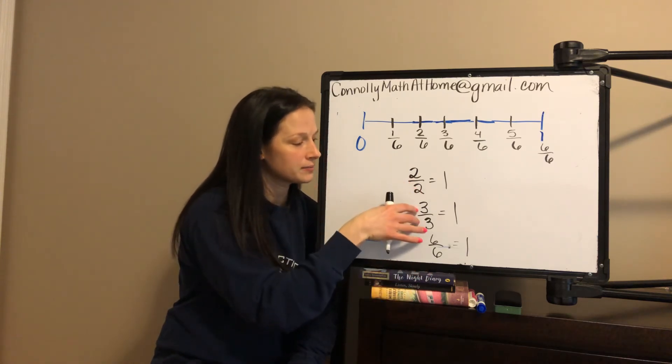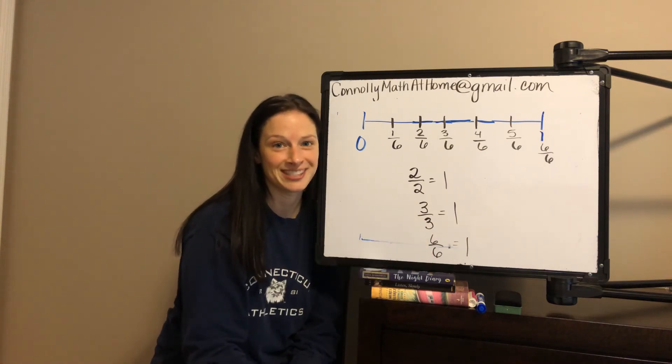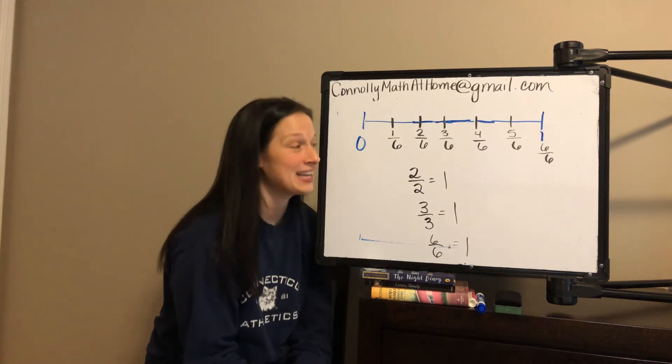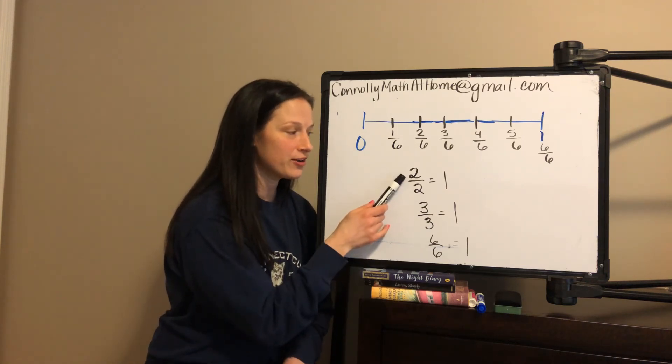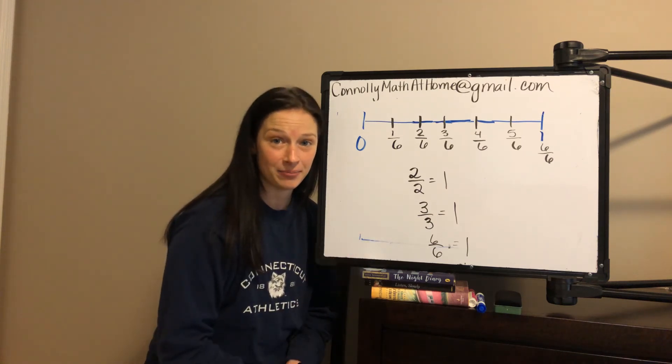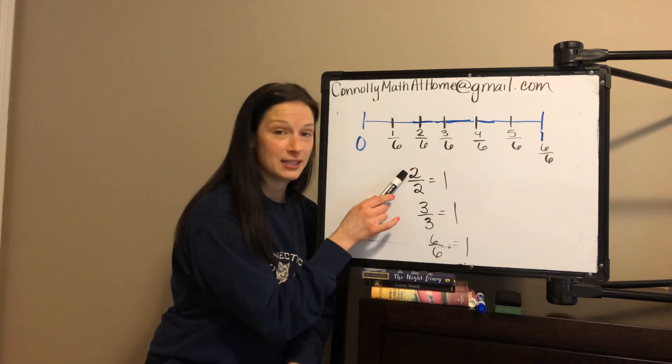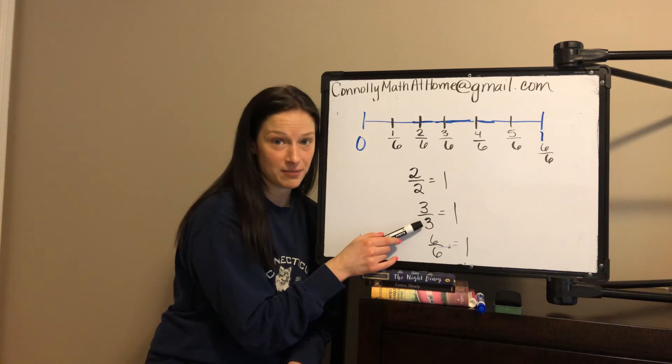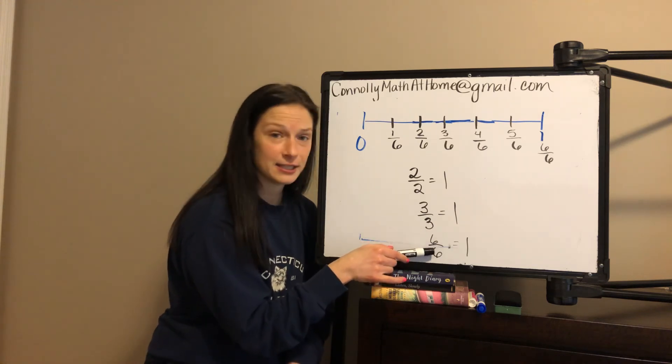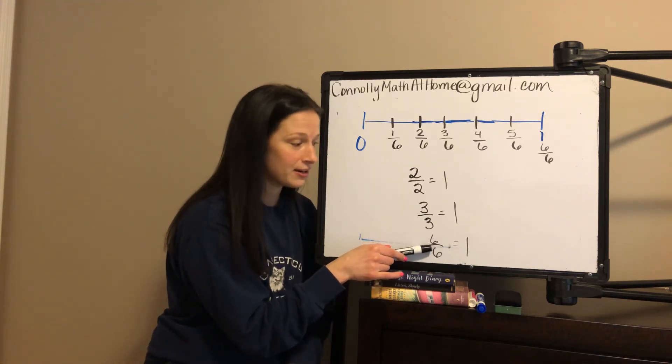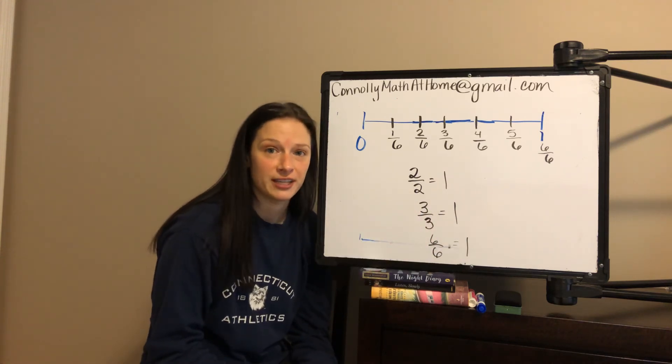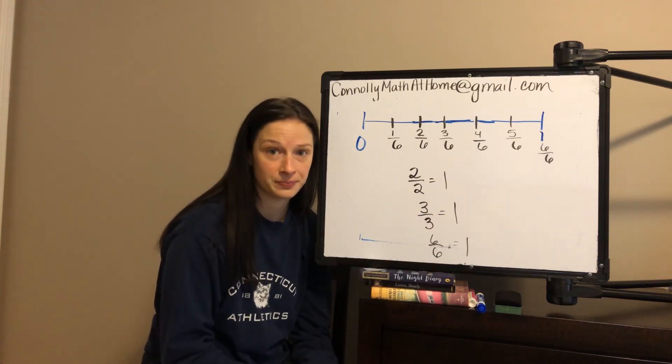What do you notice is happening with the numerator and denominator every time you have one whole? I want a noticing. Turn and talk to your partner. Just kidding. I hope that you're noticing that when the numerator and denominator are the same - two halves, same numerator, same denominator; three thirds, same numerator, same denominator; six sixths, same numerator, same denominator - that's when your fraction is equivalent to one whole.